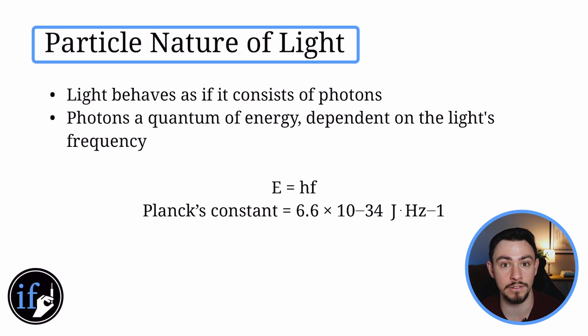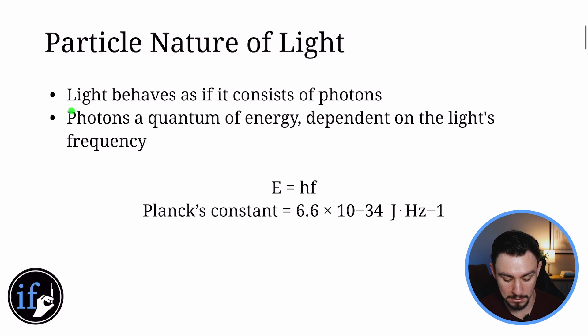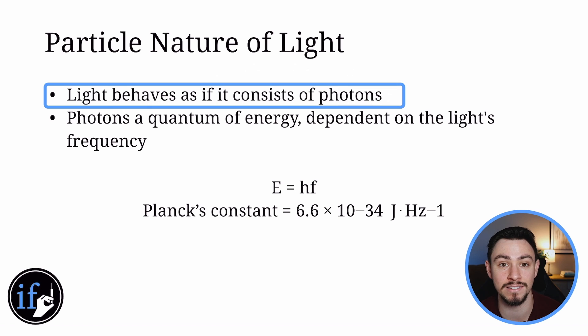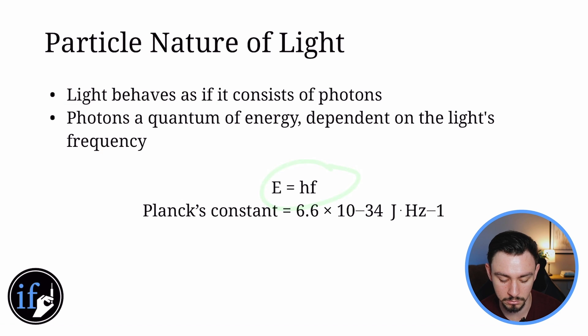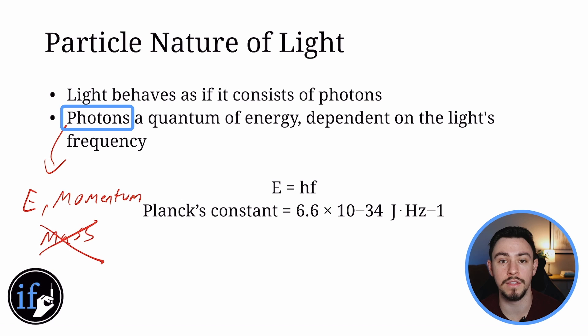Now, light can also behave as a particle because it's different. It's built different. It behaves as if it consists of photons. Now, a photon is a quantum of energy, and it depends on the light's frequency according to this equation. But before we get to the equation, which we will because that's how this gets tested on the MCAT, I want to talk a little bit about photons. So photons have energy. Photons also have momentum. Photons do not have mass. That should really, really confuse you. And that's okay. And that is explained in quantum physics. We will not cover that. But you should know mainly that light has energy. Light does not have mass.